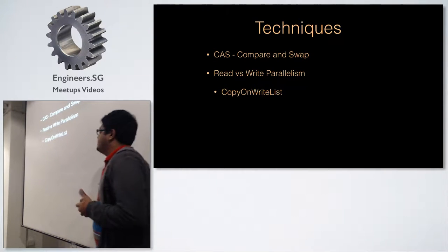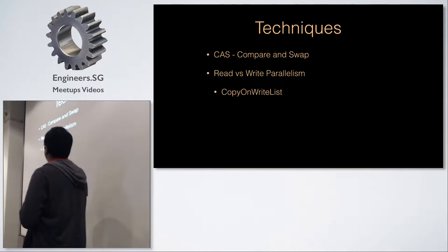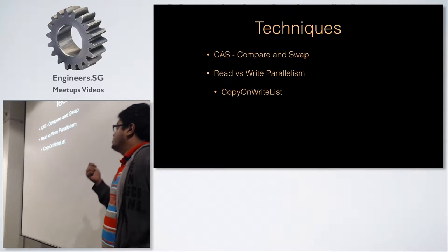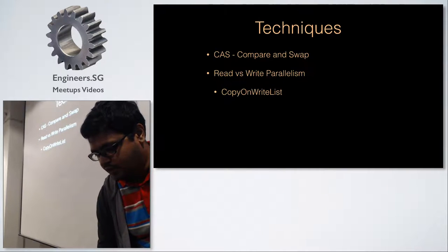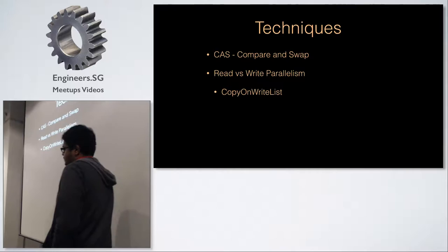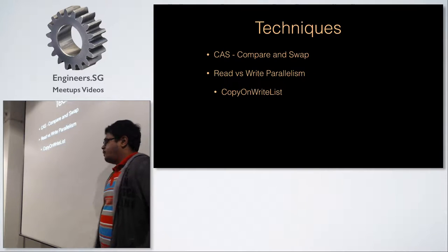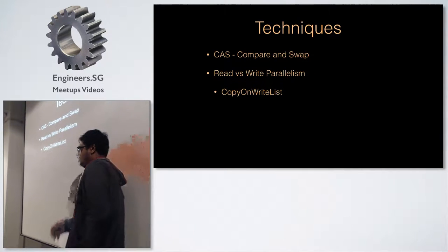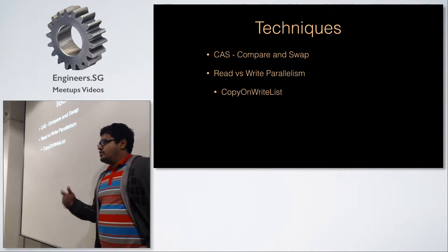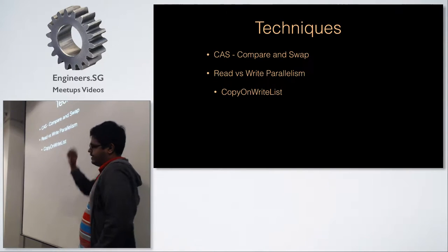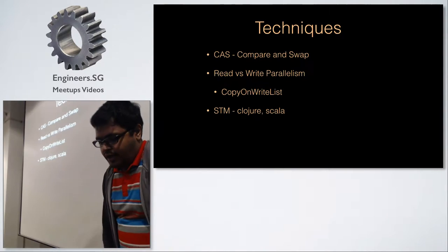One technique I wanted to discuss is compare-and-swap, which is optimistic concurrency — it allows two different threads to run without any locking, and then fails when it detects a change compared to the old state. This is also supported at the microprocessor level with specific instructions. Another technique is read-vs-write parallelism; for example, copy-on-write lists where reads are unlocked and writes take a copy and replace atomically using CAS.